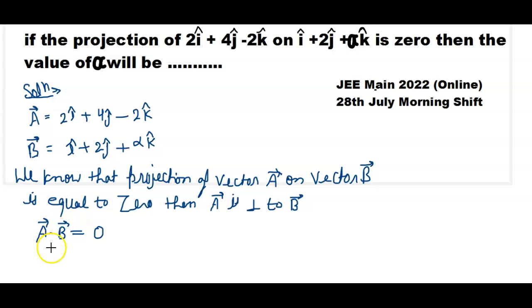Vector A value given is 2i cap plus 4j cap minus 2k cap.